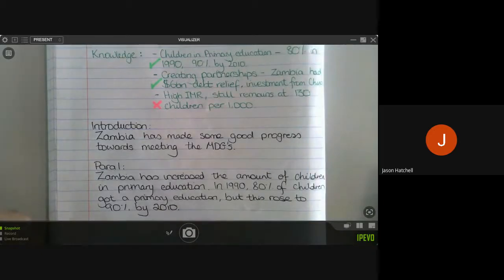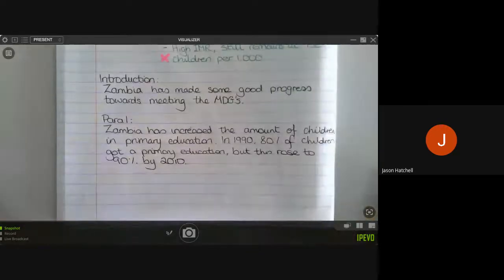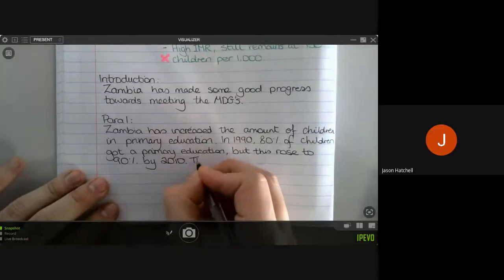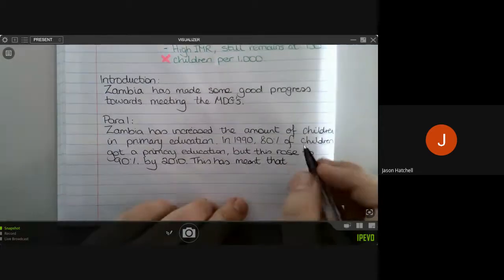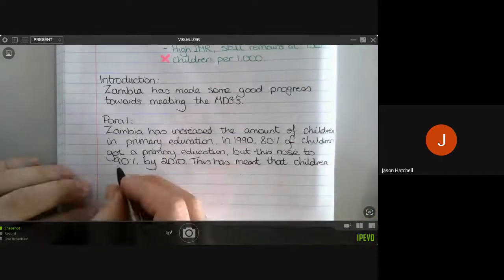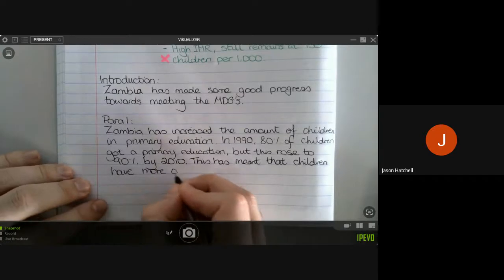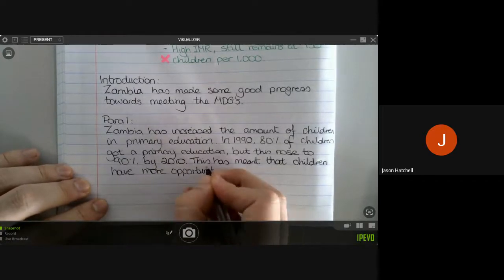So we've made our point and we've given some evidence that says that point took place. So we now need to explain how this is an achievement. Why is this relevant? So, of course, we know that the more children receive education, particularly primary education, the more able they are to read and write, the more skills they'll develop, which means the more job opportunities they may have and the more they can add to the economy of Zambia. And that means the levels of development and wealth in Zambia can increase over time. So we need to put that in a simple way in our exam answer. So we can say this has meant that children have more opportunity to develop skills.